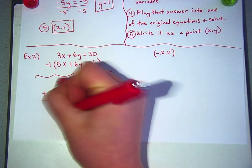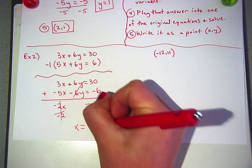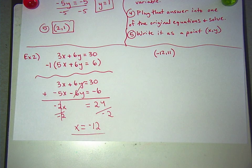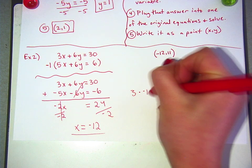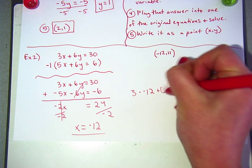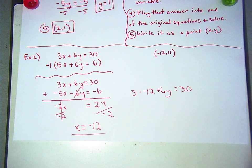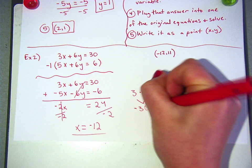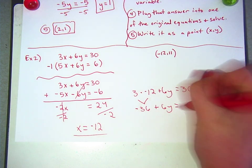Divide by negative 2 on both sides. You get x equals negative 12. And then we plug that into the top one, so 3 times a negative 12 plus 6y equals 30. You do that, and that turns out to be whatever that turns out to be.